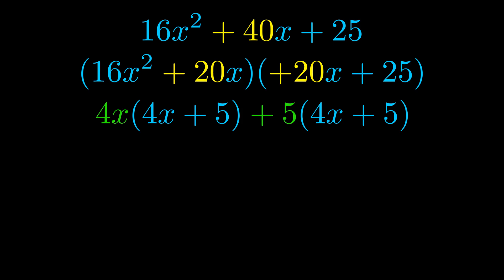Notice also how what remains inside of the parentheses is the same in both cases. The blue values are the same. Those blue values will become one of our factors and we will combine the two green values, the GCFs that we pulled out, to get the other one. And that is our fully factored equation.